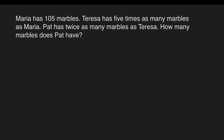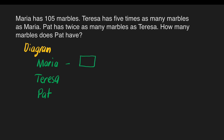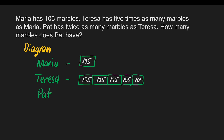Example 3: Maria has 105 marbles. Teresa has 5 times as many marbles as Maria. Pat has twice as many marbles as Teresa. How many marbles does Pat have? Let's draw the diagram. We have three persons: Maria, Teresa, and Pat. Maria has 105 marbles — we put 105 inside her box. Teresa has 5 times as many, so we draw 5 boxes with 105 in each.